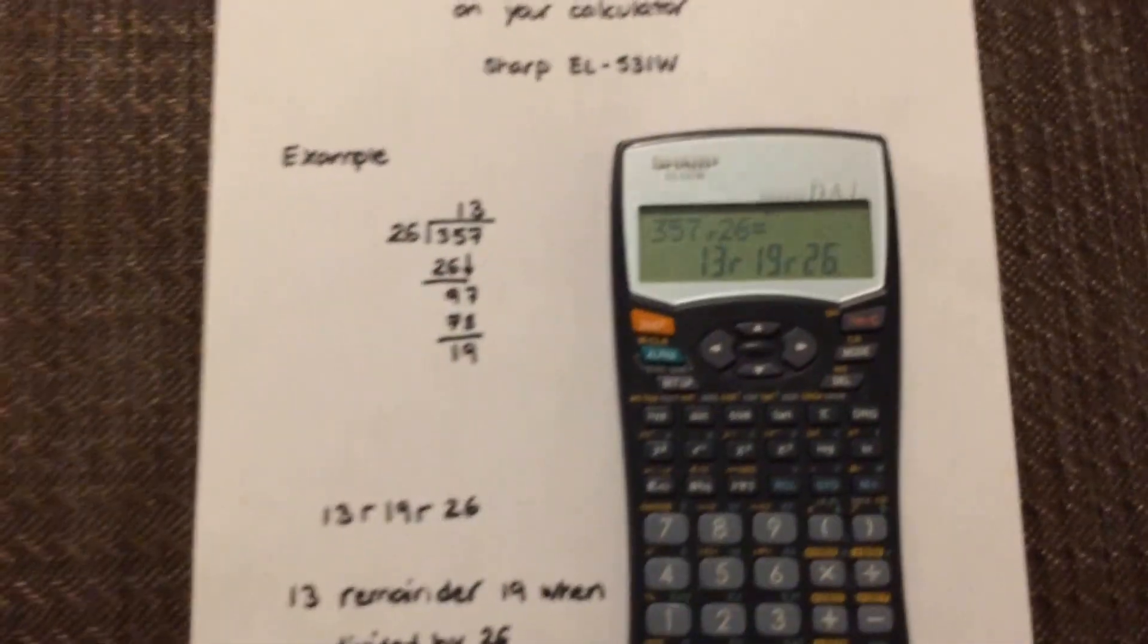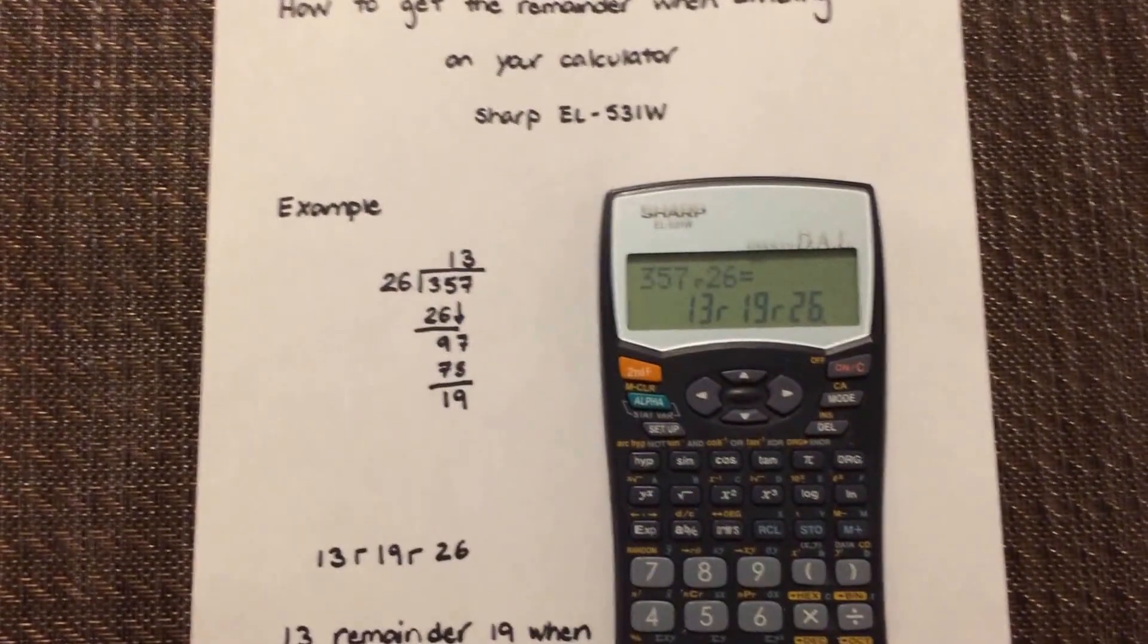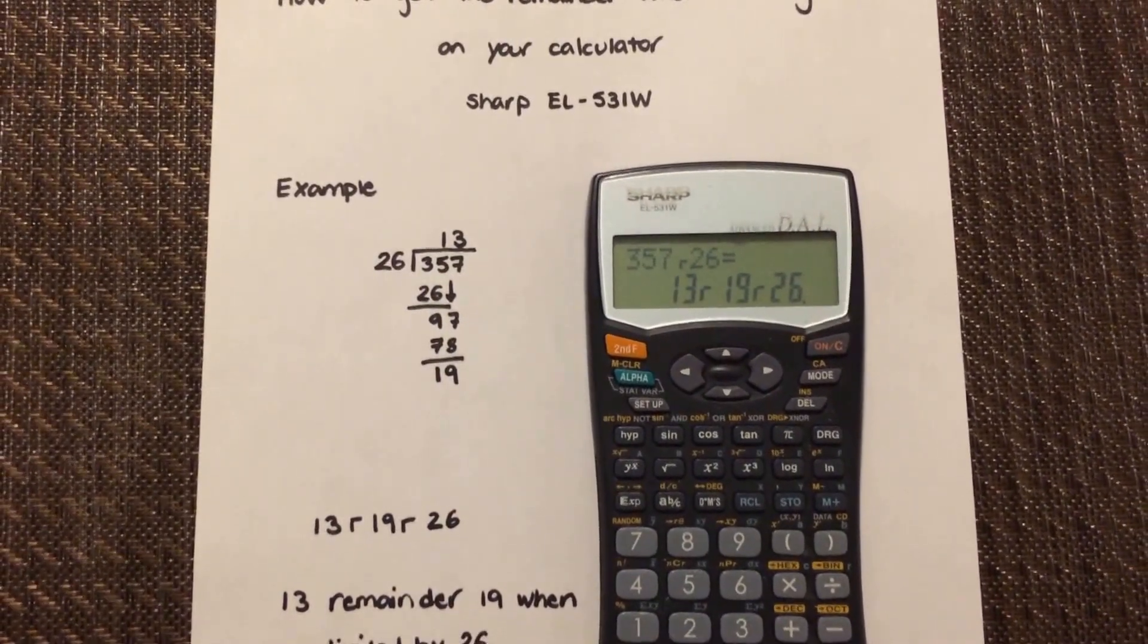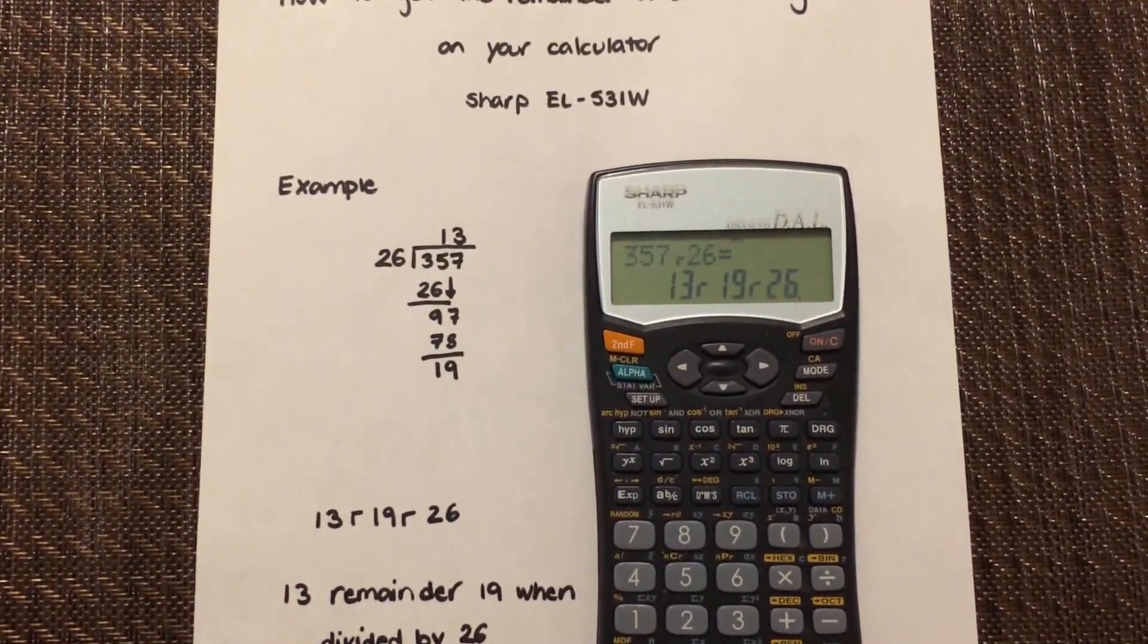And that's a simple way of getting a remainder on your calculator without performing long division using Sharp EL-531W.